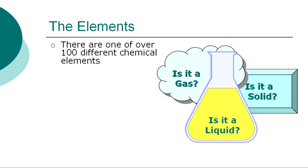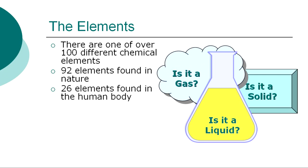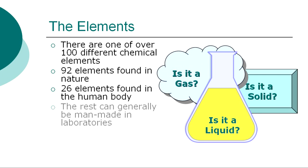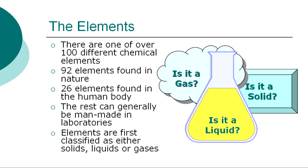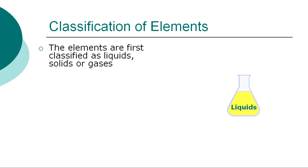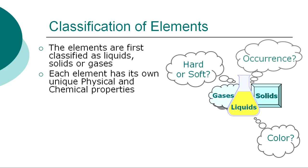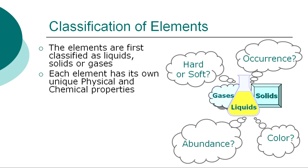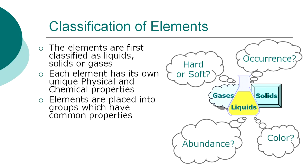There are over 100 different chemical elements known to modern chemistry. 92 of these elements can be found in nature, 26 of these elements can be found in the human body, and the remaining elements can be generally man-made in laboratories. Elements are classified by their states of matter as solids, liquids, or gases. Each element has its own unique physical and chemical properties. Once the properties of individual elements have been established, they are placed into groups in which all of the elements have common characteristics and properties.